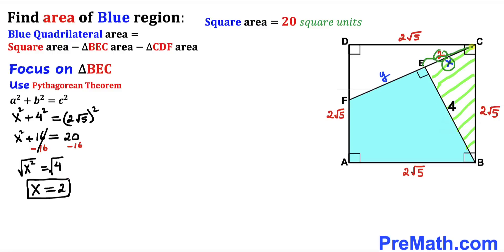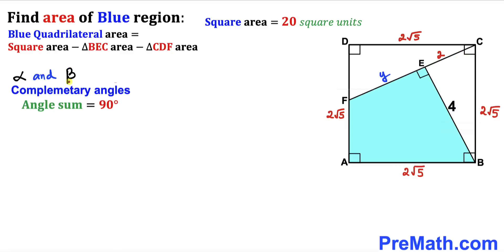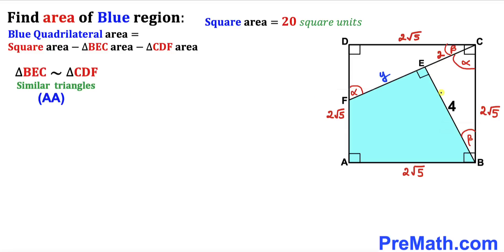So EC length is 2 units. Let's assume alpha and beta are two complementary angles — their sum must equal 90 degrees. Focusing on triangle CDF: one angle is alpha, the right angle is 90 degrees, so the remaining angle is beta. In triangle BEC the angles work out similarly, so triangle BEC and triangle CDF are similar triangles by the angle similarity theorem.